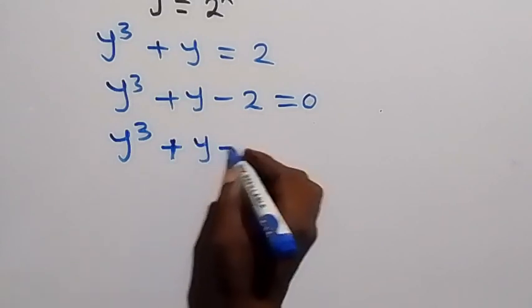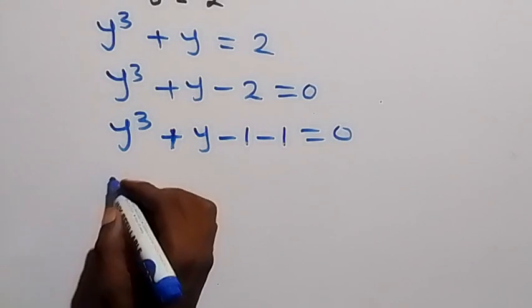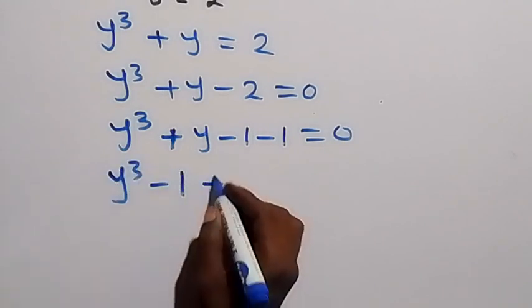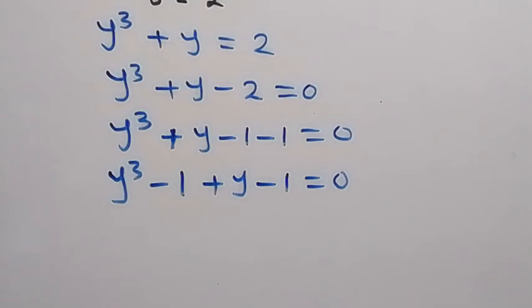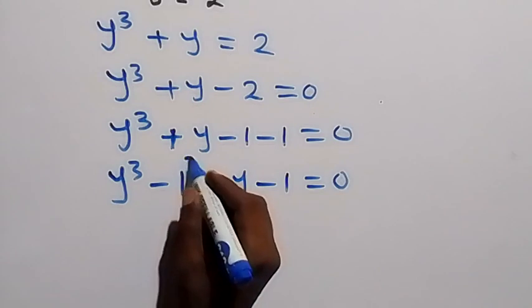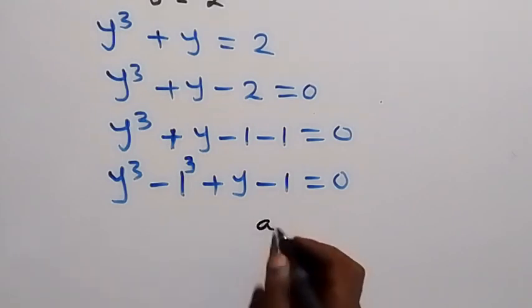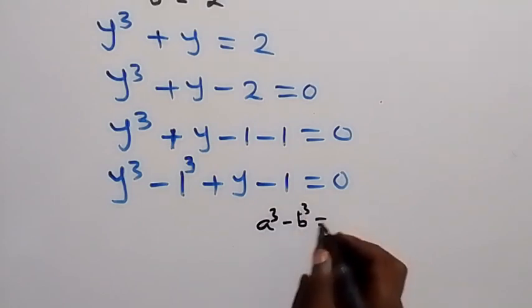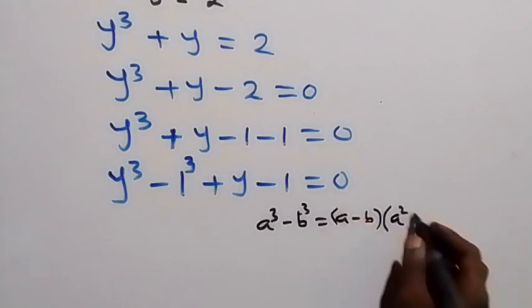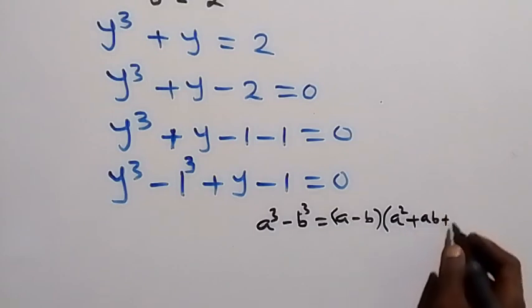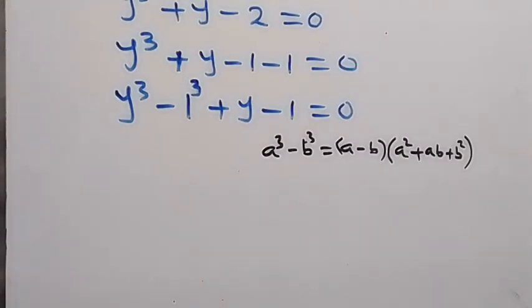We rewrite this as y cubed minus 1, then plus y minus 1, equals to 0. Note that 1 can also be written as 1 to the power of 3. Using the difference of two cubes identity — a cubed minus b cubed equals a minus b, multiplied by a squared plus ab plus b squared — we apply this to y cubed minus 1 squared.